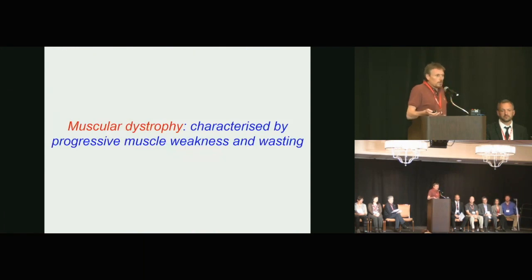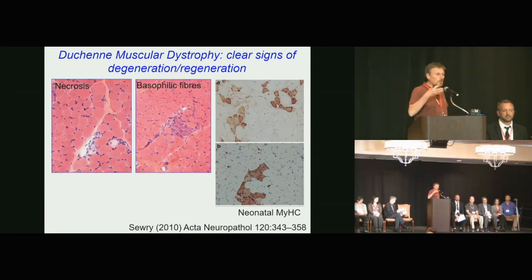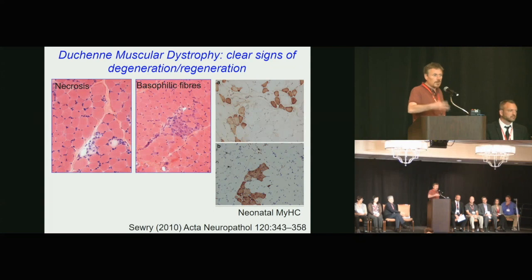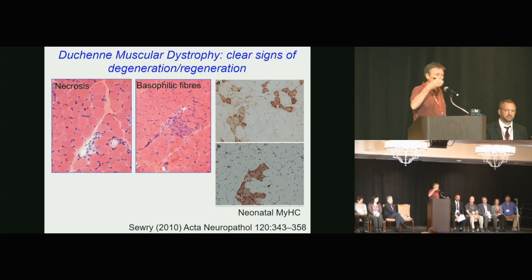The muscular dystrophies as a group of diseases essentially means muscle weakness and muscle wasting. Duchenne is notable because it has a regenerative response — the muscle starts to get damaged, but then satellite cells activate and repair it. In the tissue image, you can see brown dots — those are immature muscle fibers being made to replace the lost fibers.